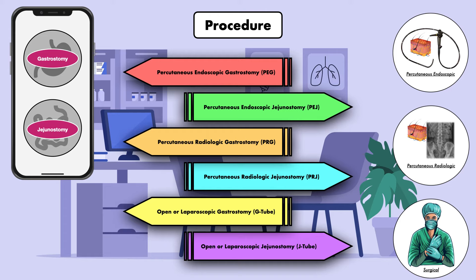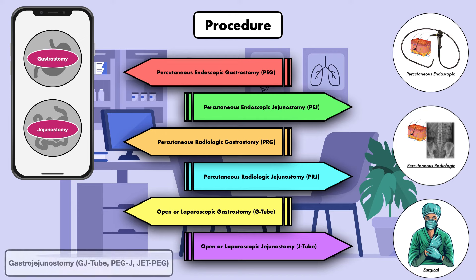One last feeding tube I will mention here is the gastrojejunostomy. This is when the tube is inserted into the stomach but ends in the jejunum, and is often referred to as the GJ tube, PEG-J, or JET-PEG, which stands for Jejunal Extension Through a PEG.